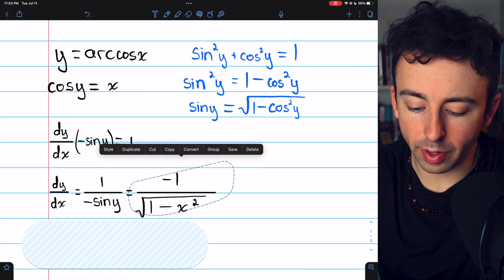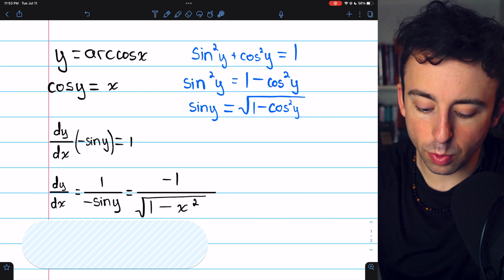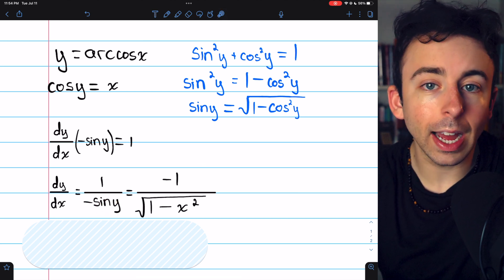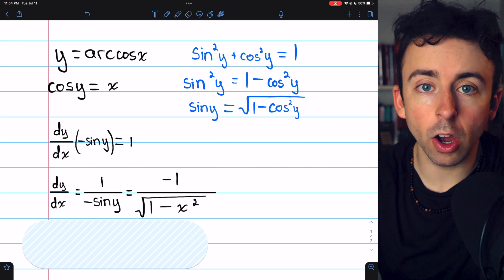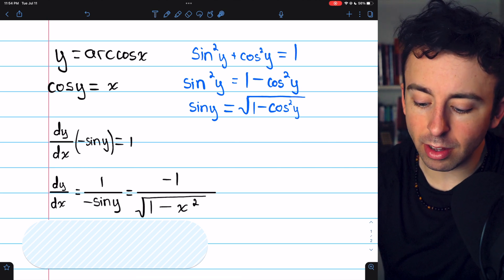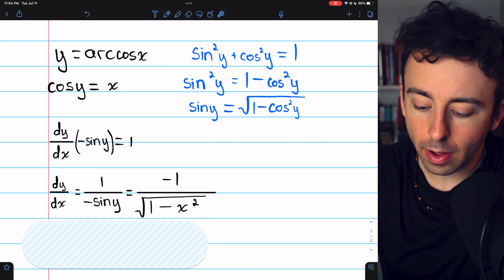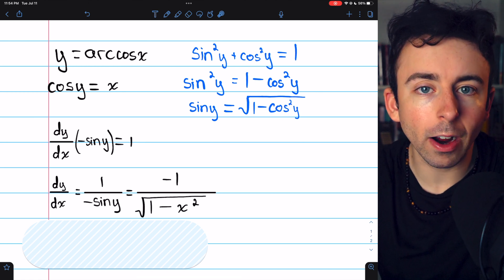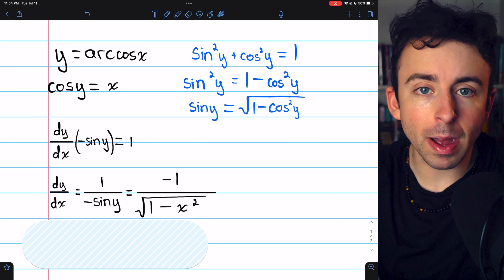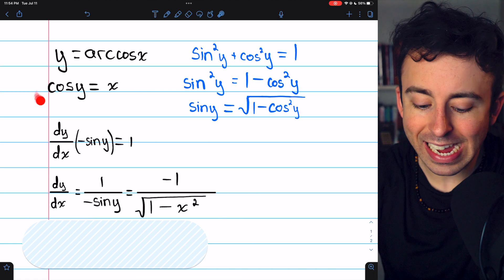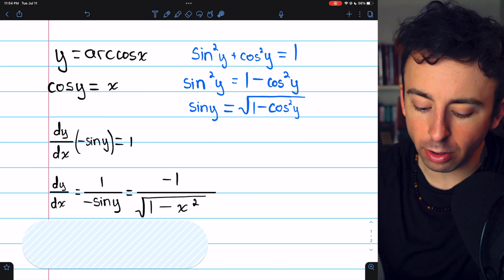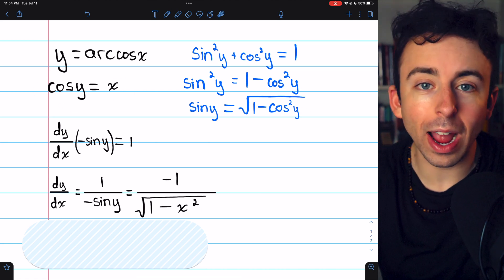So we can rewrite this derivative, moving the negative to the numerator, and then that just leaves sine y in the denominator, which we know by the Pythagorean identity is the square root of 1 minus cosine squared of y. But remember, cosine of y is x. So, cosine squared of y is x squared.